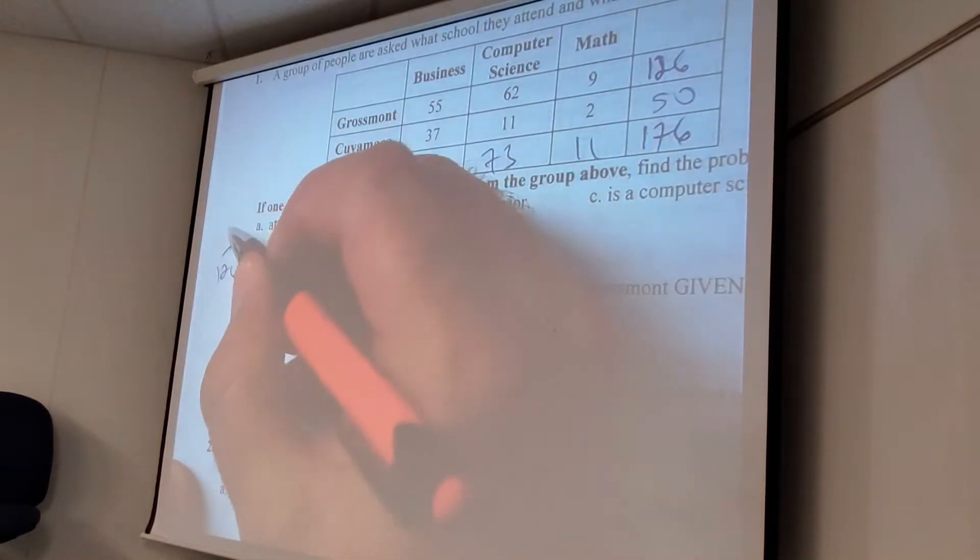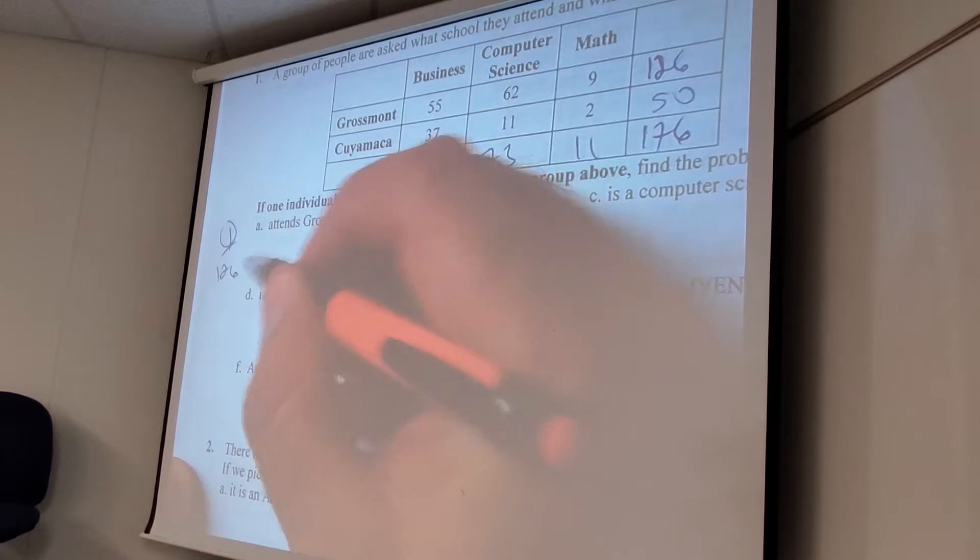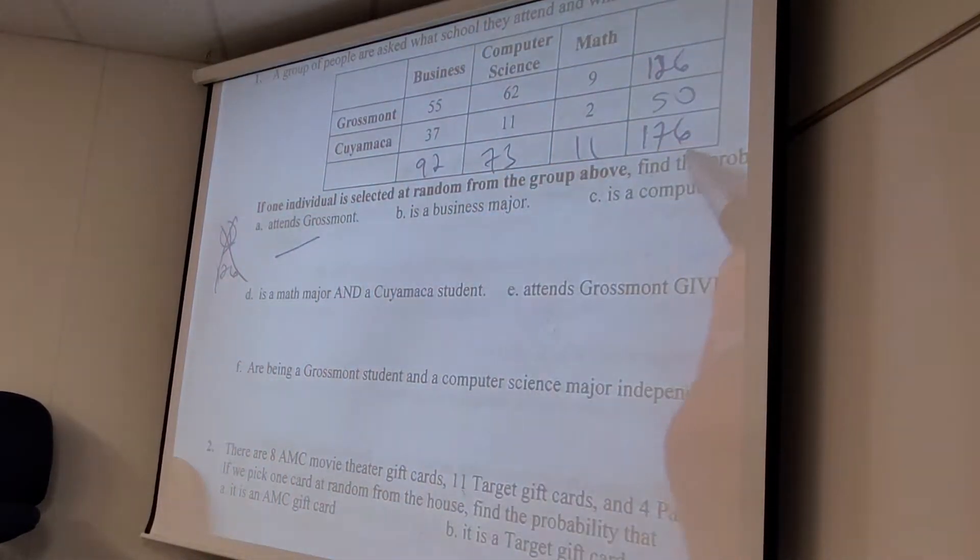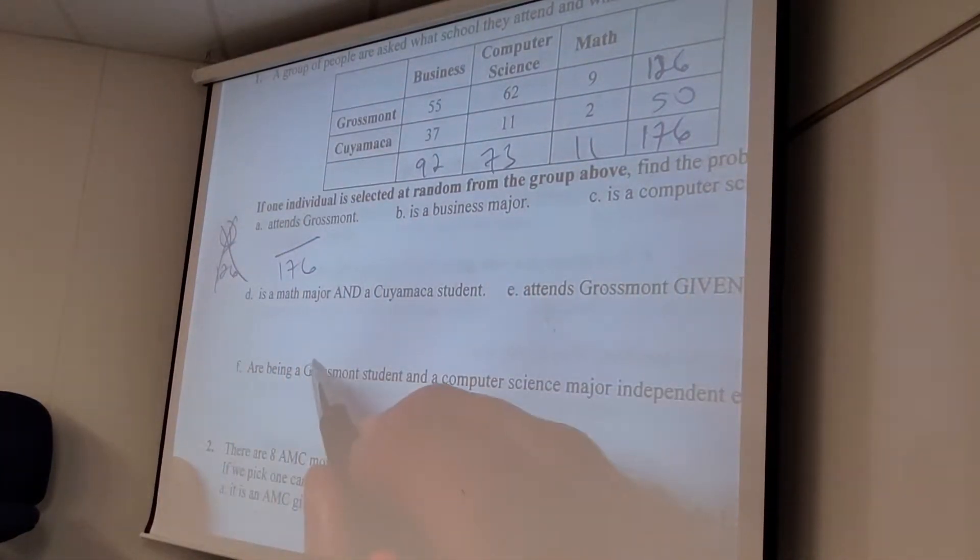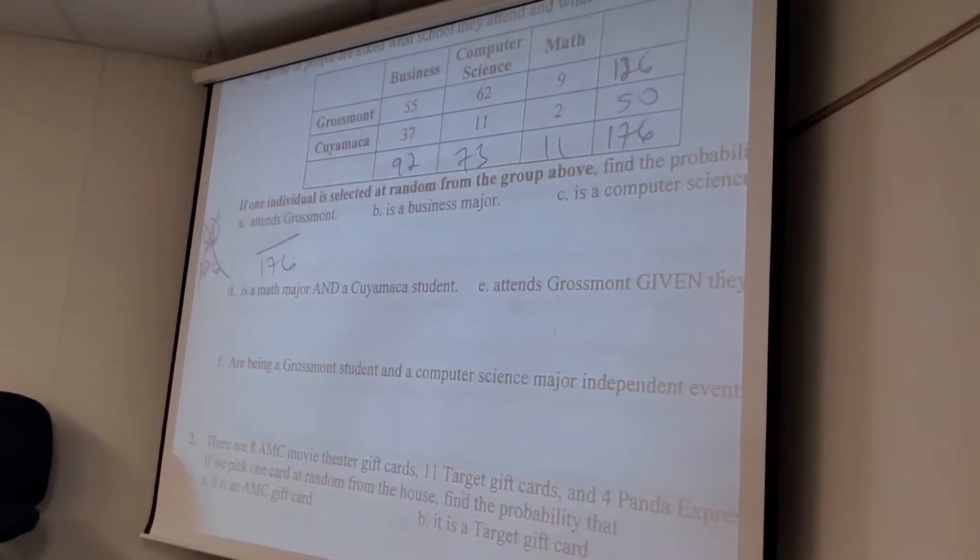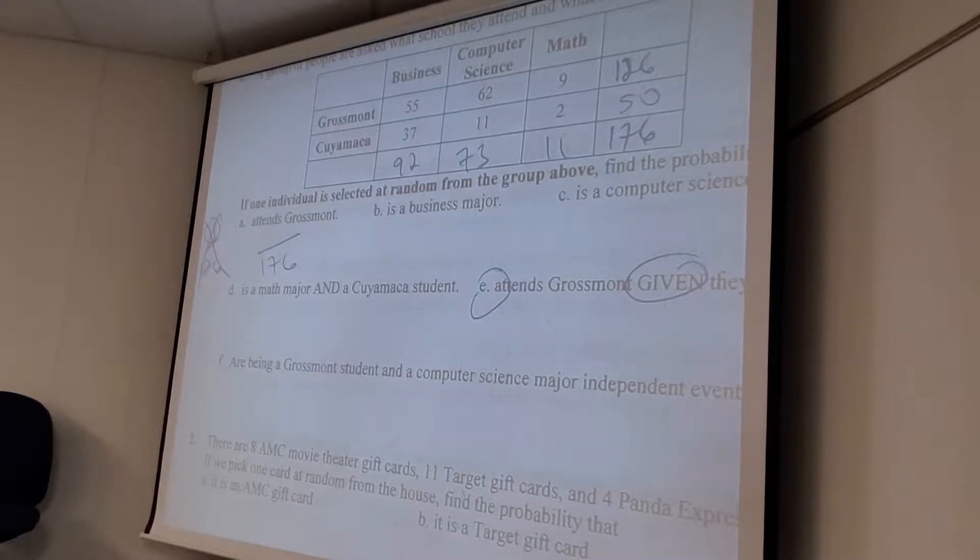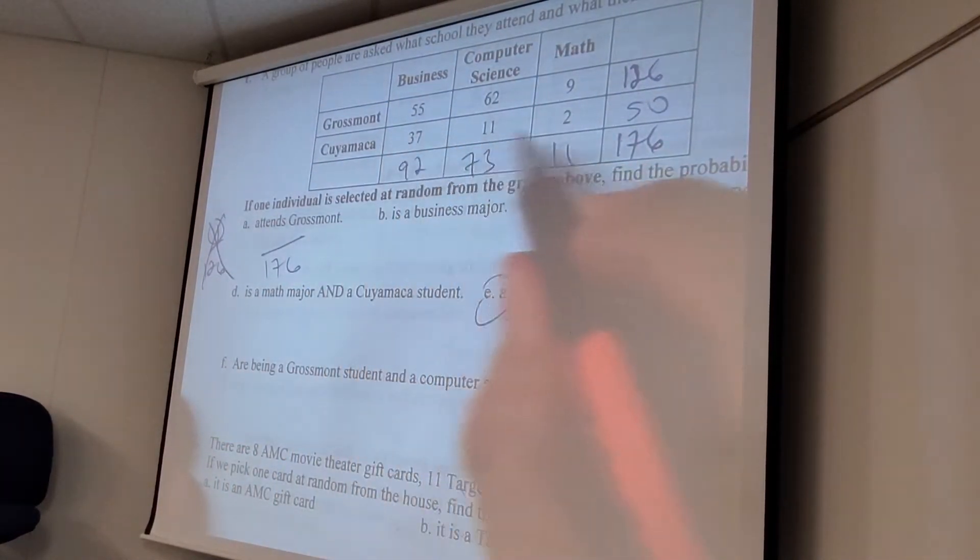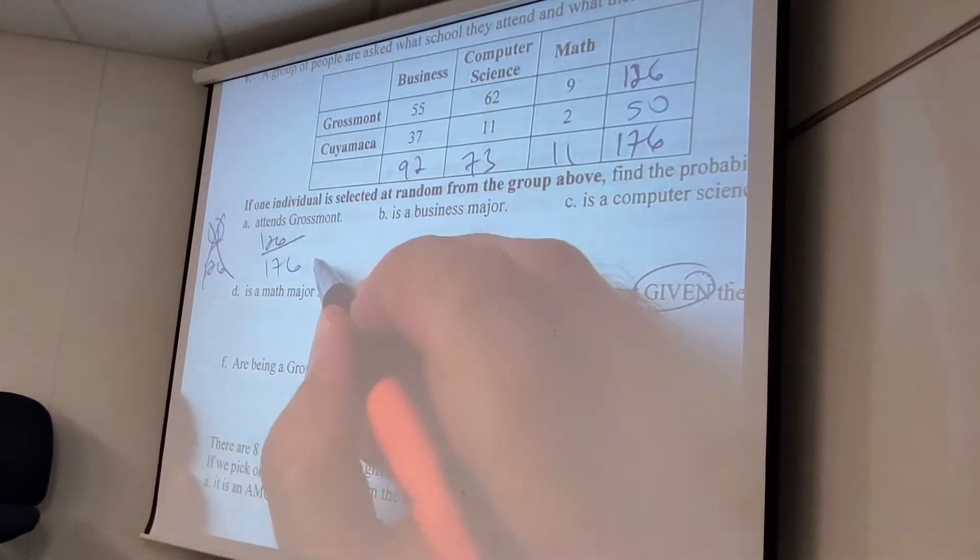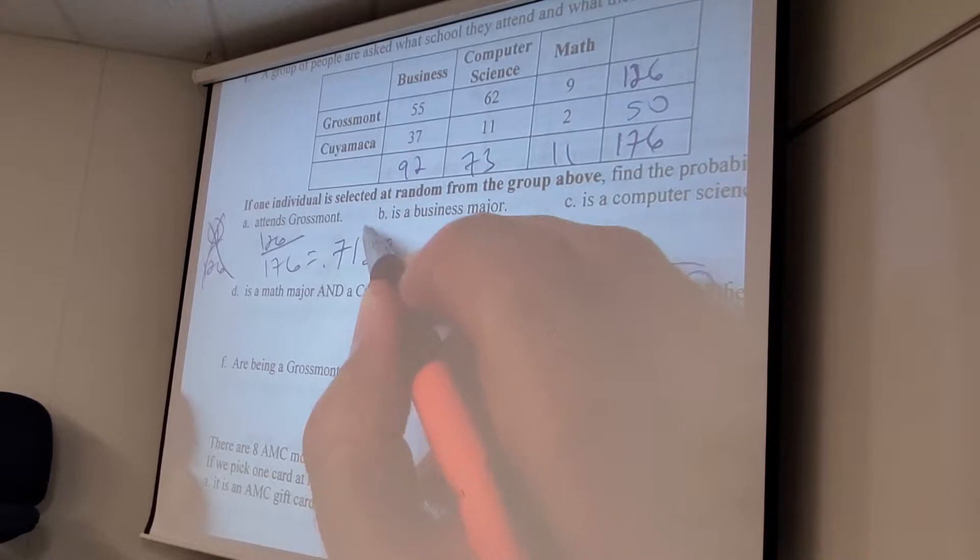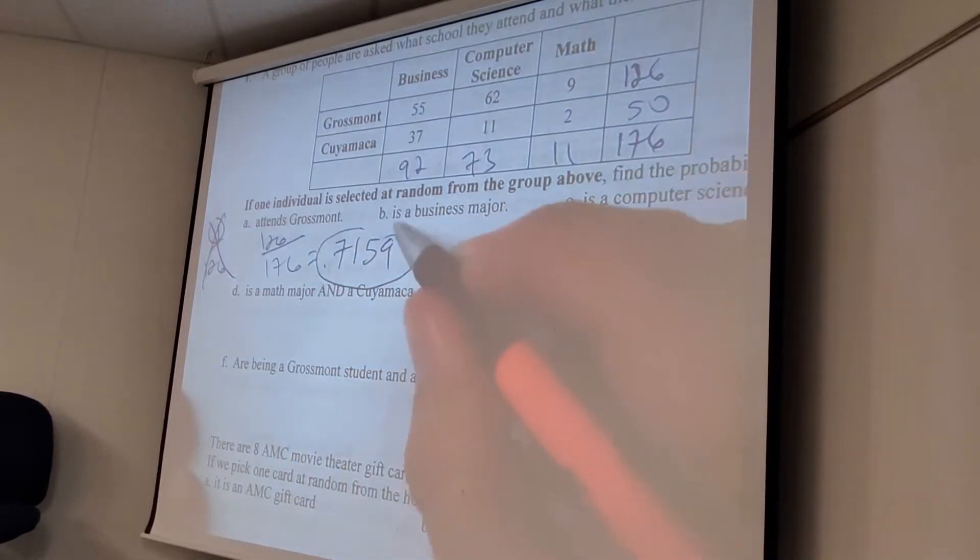So I did see a few people doing this. That doesn't make any sense for this because if I had more Grossmont students, the probability should increase. This probability would decrease. That doesn't make any sense. I'm not looking for a specific Grossmont student. So that's not right. How many people could it be? I don't know anything about the person. So it could be 176.